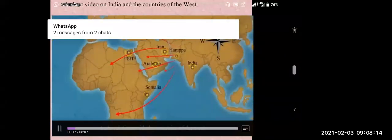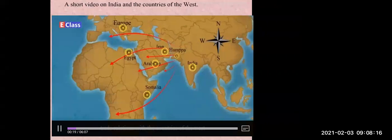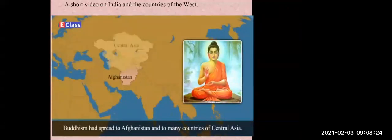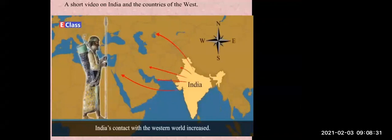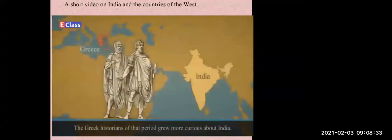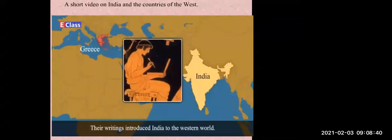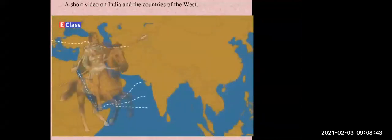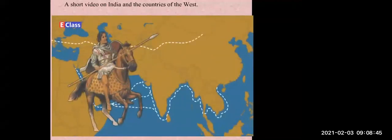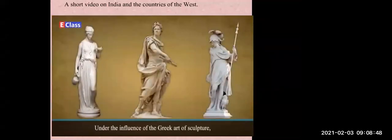India has had economic and cultural exchanges with the outside world. Buddhism had spread to Afghanistan and to many countries of Central Asia. During the period of the Iranian Empire, India's contact with the western world increased. The great historians of that period were curious about India, and their writings introduced India to the western world. The routes which were later used by Alexander were open for trade between India and the countries of the West.